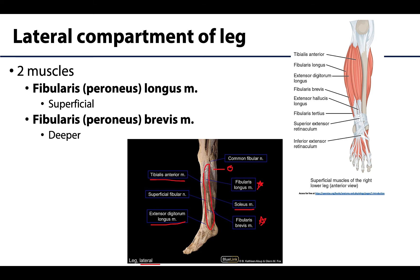The fibularis longus, as its name would suggest, is longer and more superficial. It becomes more tendinous — you can see it narrowing down to a tendon as you get more distally. The fibularis or peroneus brevis is shorter and deeper, but it's often visible right where the fibularis longus tendon is, so you can see the fibularis brevis deep to the fibularis longus tendon.